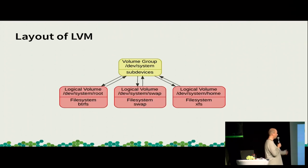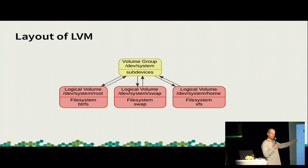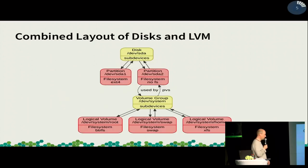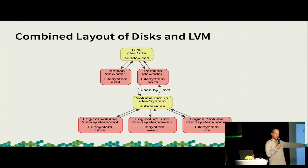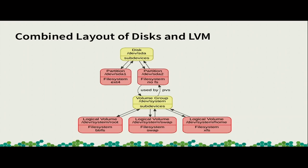Then we have logical volumes or LVM. We have a volume group, which again can have several sub-devices, which are the logical volumes. This is completely analogous to the disk and partition setup. When you combine these two, you need a new connection type from the partition to the volume group, and this is another mechanism than the connection from the disks to the partitions. So now when you want to find whether this file system is on a USB stick, you have to follow to the volume group using one mechanism, then ask the volume group about its physical volumes, go find the partition, and then take the link to the disk — two methods.